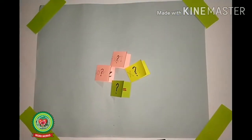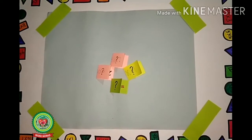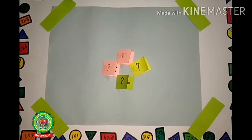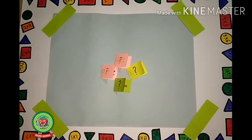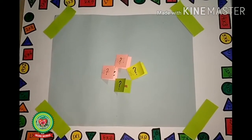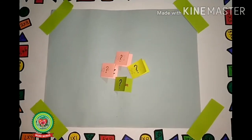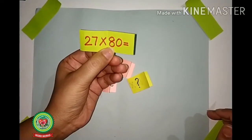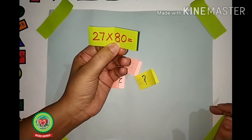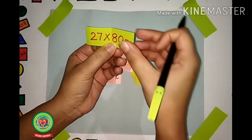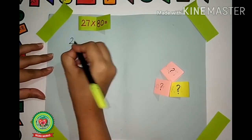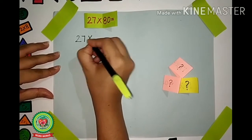Now let us play a game. We will play a game and learn and solve more examples. Can you see chits lying over here? There are questions written inside the chits. I will pick one chit at a time, see what the question is, and we will solve it. The question is: 27 × 80. Let us solve it.